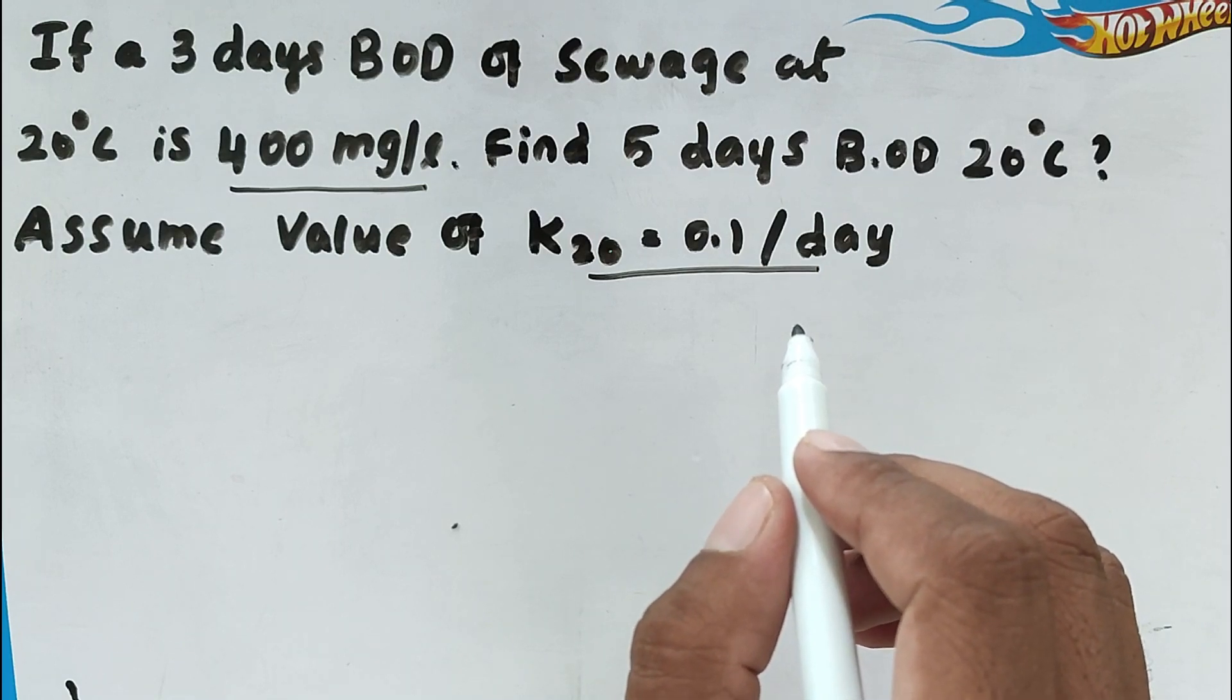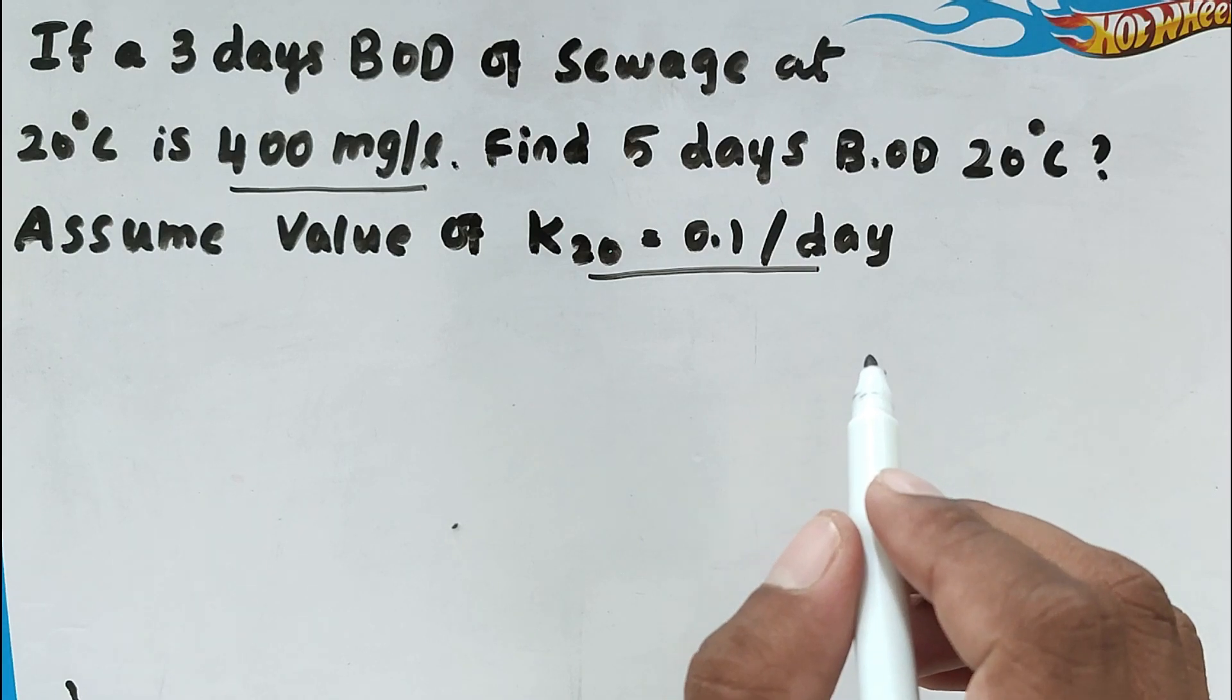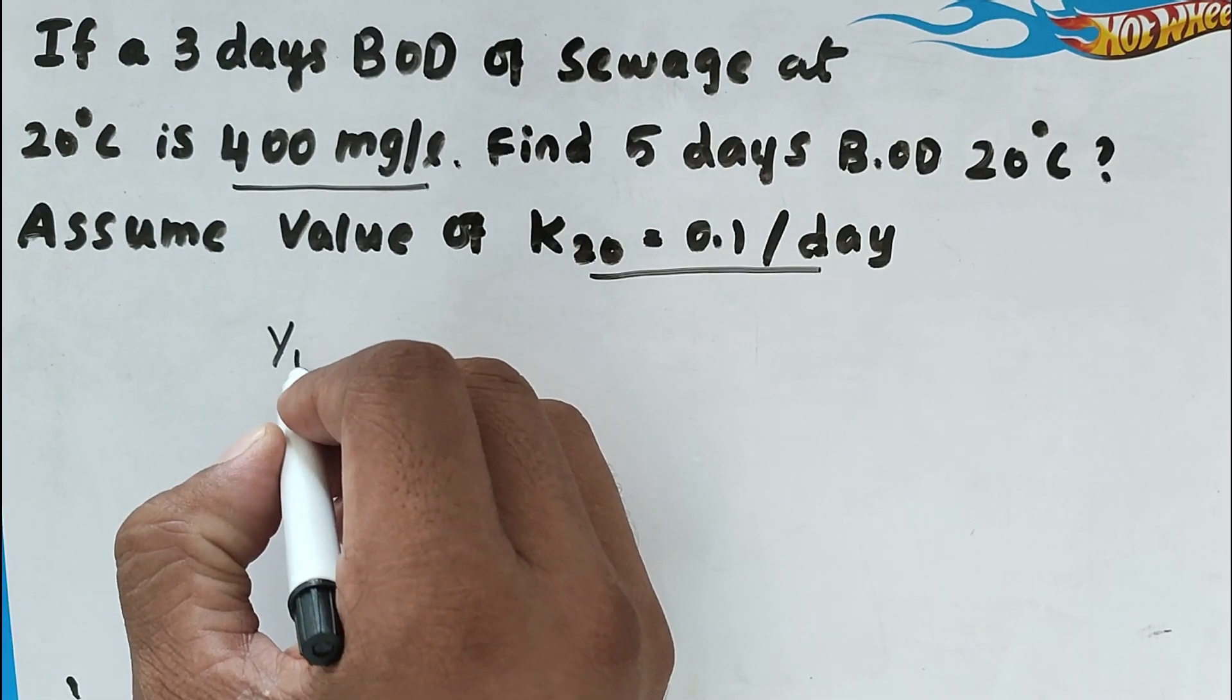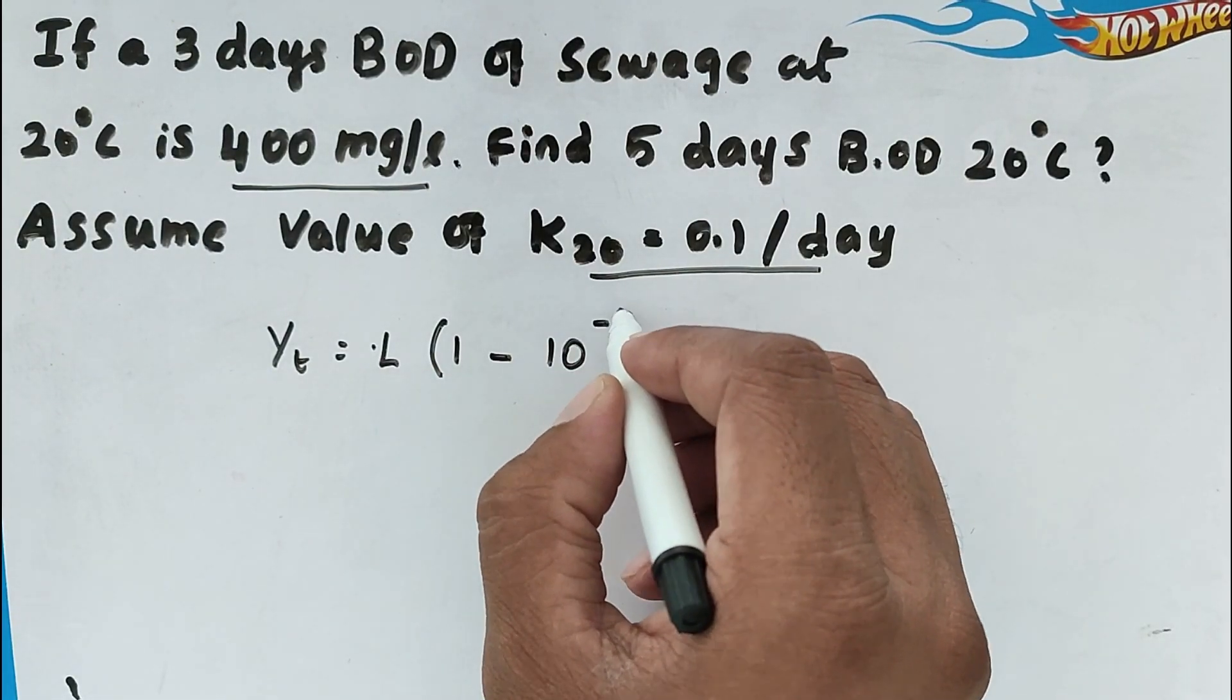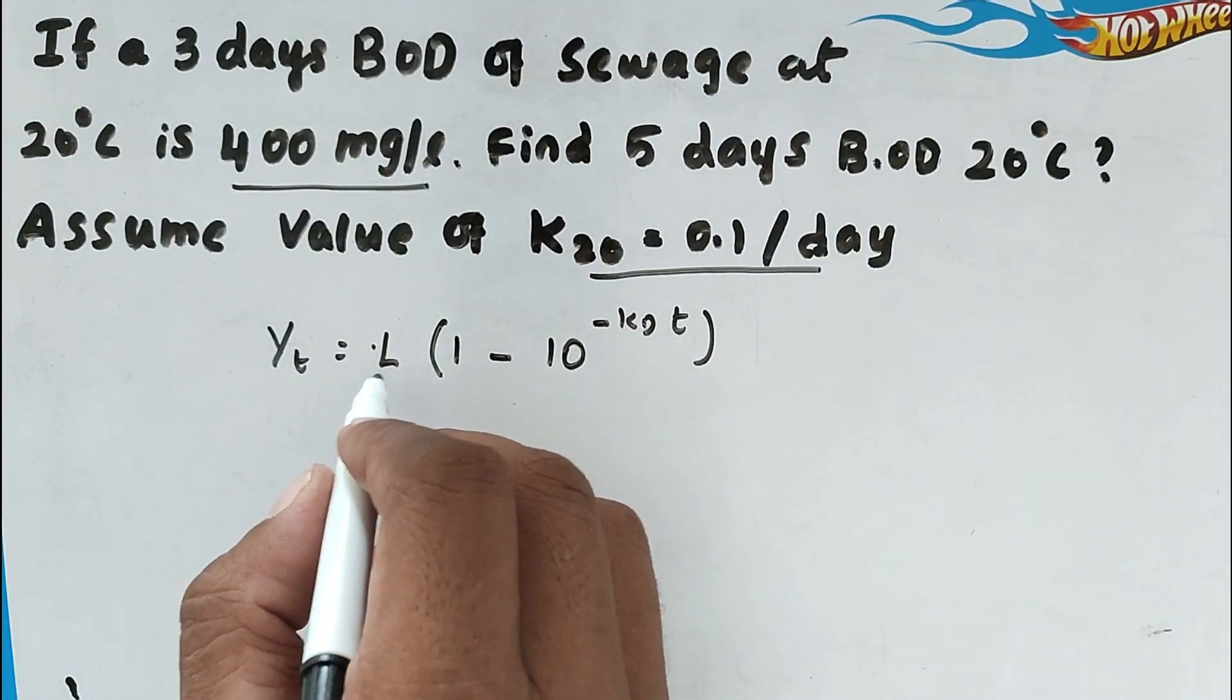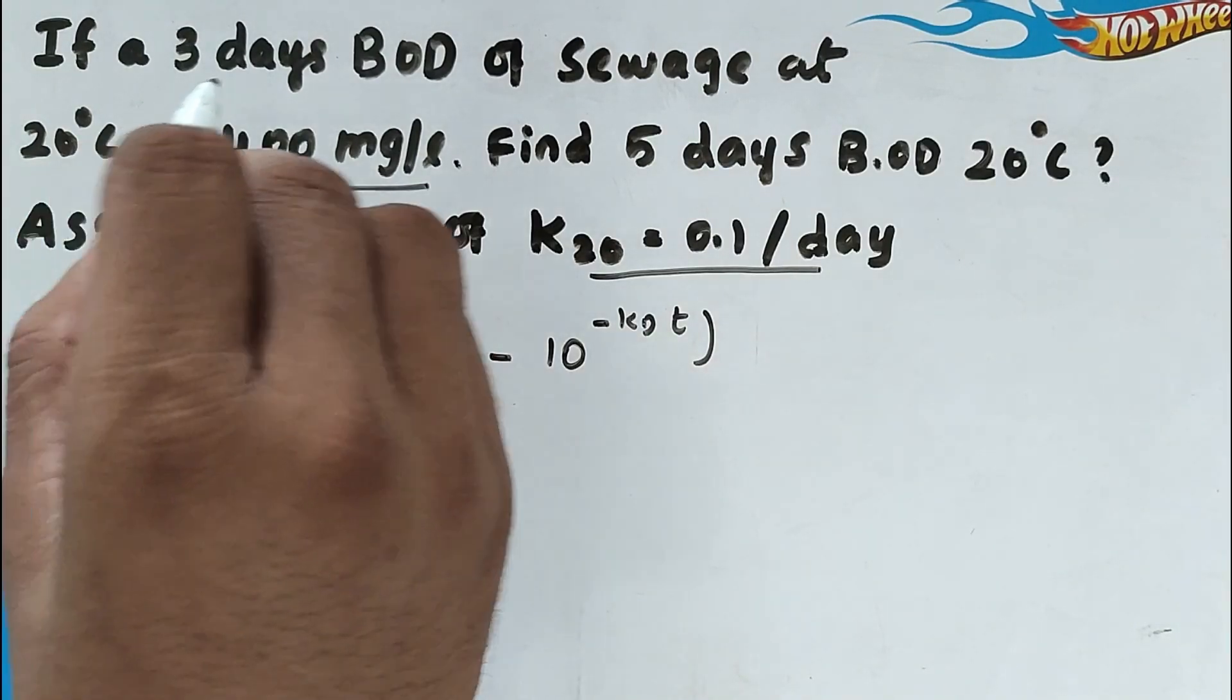So this is the problem, we have to find out the ultimate BOD for 5 days. Now we know the formula: Yt equal to L into 1 minus 10 power minus Kd into T. So now we can find out the ultimate BOD L value for 3 days.